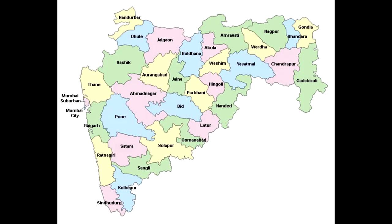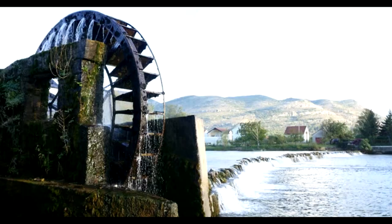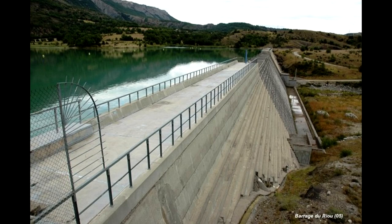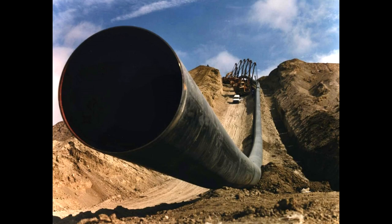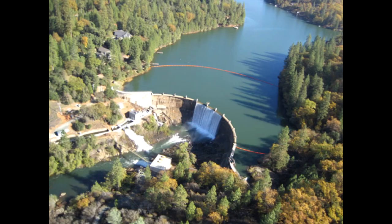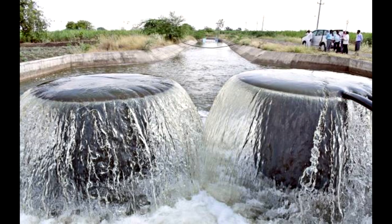In the United States, 8% of irrigation is accounted for by lift irrigation. There are also many different types of lift irrigation projects, including the world's largest lift irrigation projects, which have multiple barriers and varied designs.